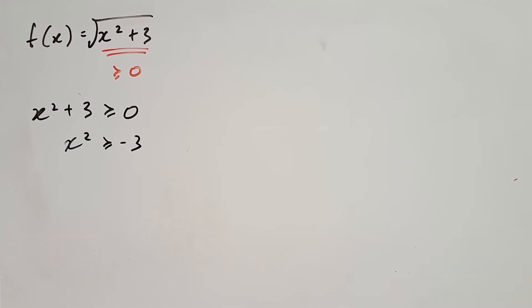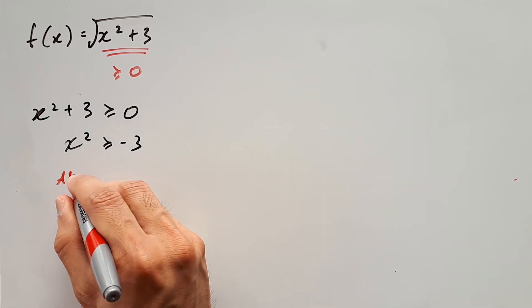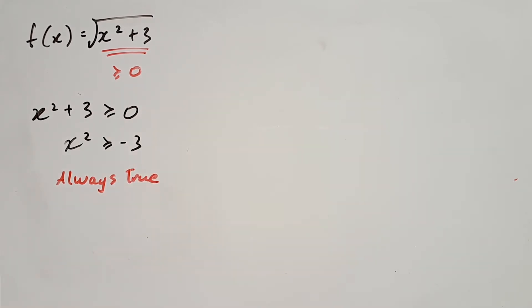And when you take x squared and plus 3, you'll always get a positive number anyway. So the inside of the square root will always be positive, no matter what you do. So this will always be true for any x value. In other words, x can be any real number, because there is no restriction.